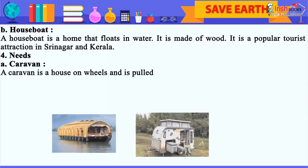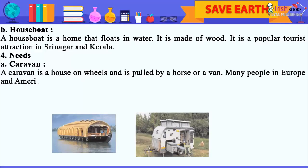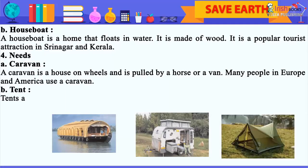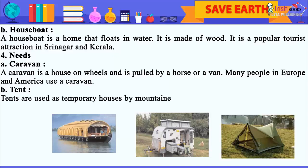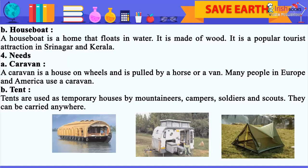A. Caravan: A caravan is a house on wheels and is pulled by a horse or a van. Many people in Europe and America use a caravan. B. Tent: Tents are used as temporary houses by mountaineers, campers, soldiers and scouts. They can be carried anywhere.